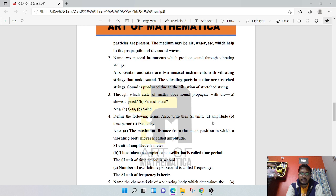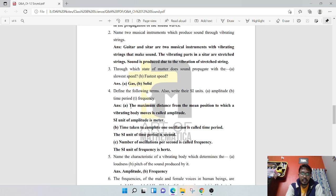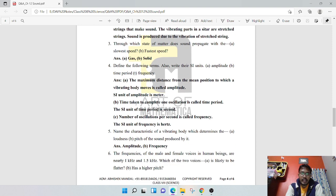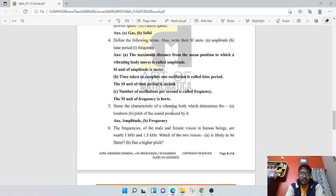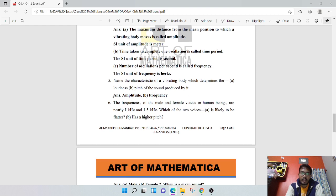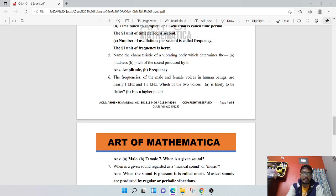Define the following terms and write their SI units. Amplitude: the maximum distance from the mean position to which a vibrating body moves. SI unit is meter. Time period: the time taken to complete one oscillation. SI unit is second. Frequency: number of oscillations per second. SI unit is hertz. Name the characteristics of a vibrating body which determines loudness and pitch of the sound - amplitude determines loudness, and frequency determines pitch.